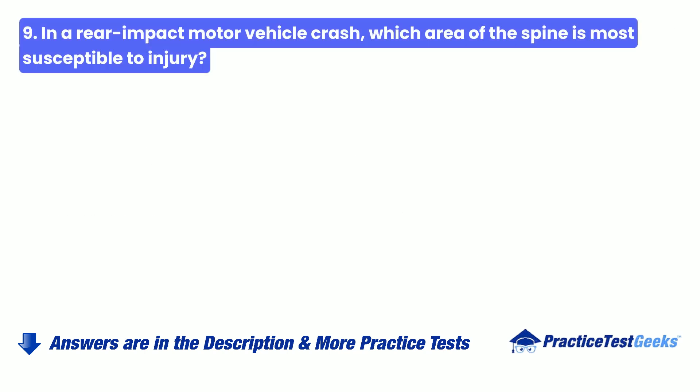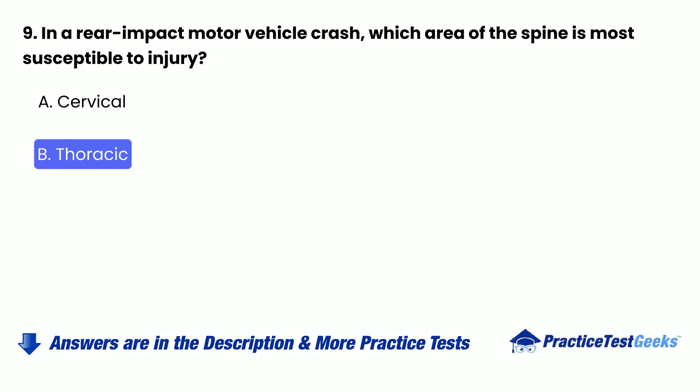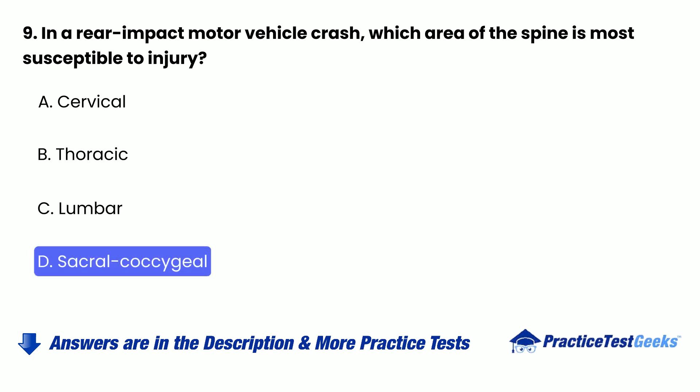Question 9: In a rear-impact motor vehicle crash, which area of the spine is most susceptible to injury? A. Cervical. B. Thoracic. C. Lumbar. D. Sacral coccygeal.